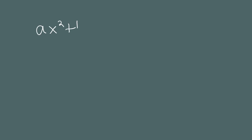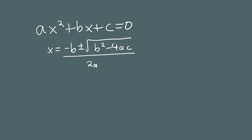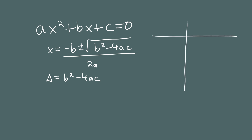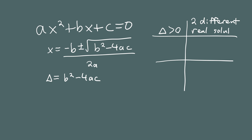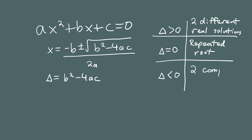To recap: if you have an equation ax squared plus bx plus c equals 0, the solutions are given by the quadratic formula. The number under the radical is called the discriminant, denoted by capital delta from the Greek alphabet. The word discriminant sounds like discriminate — and that's exactly what this number does. It lets you discriminate what type of answers you'll get. When the discriminant is positive, you get two different real solutions. When the discriminant is zero, you get a repeated real root. And when the discriminant is negative, you get two complex solutions.